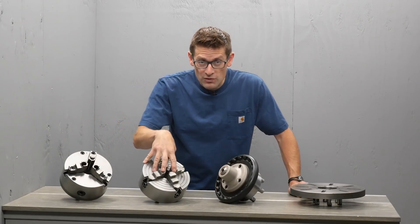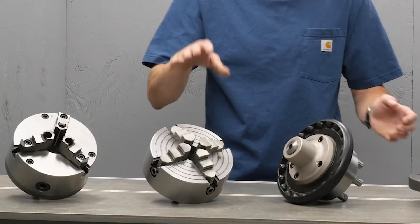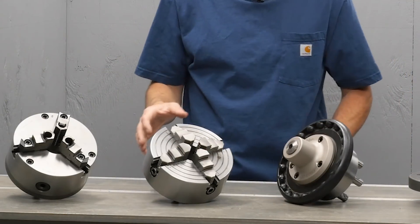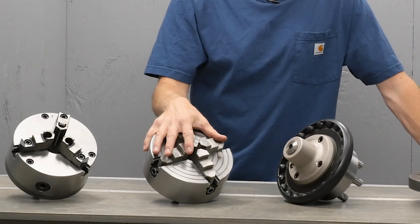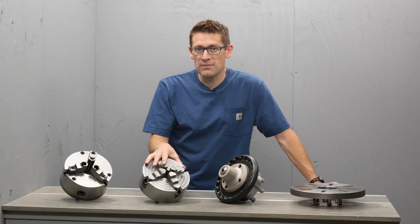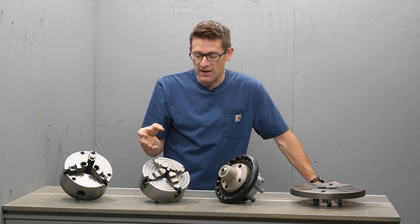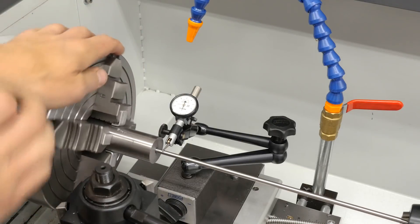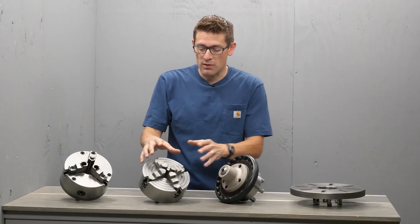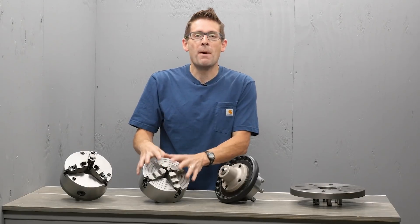Step up to a four jaw independent chuck, you've got a different set of trade-offs. The four independent jaws enable you to hold irregular items and to dial in your concentricity. If you're doing something like gunsmithing, dialing in the barrel axis to the axis of the spindle would be a great example of where this chuck is ideal.